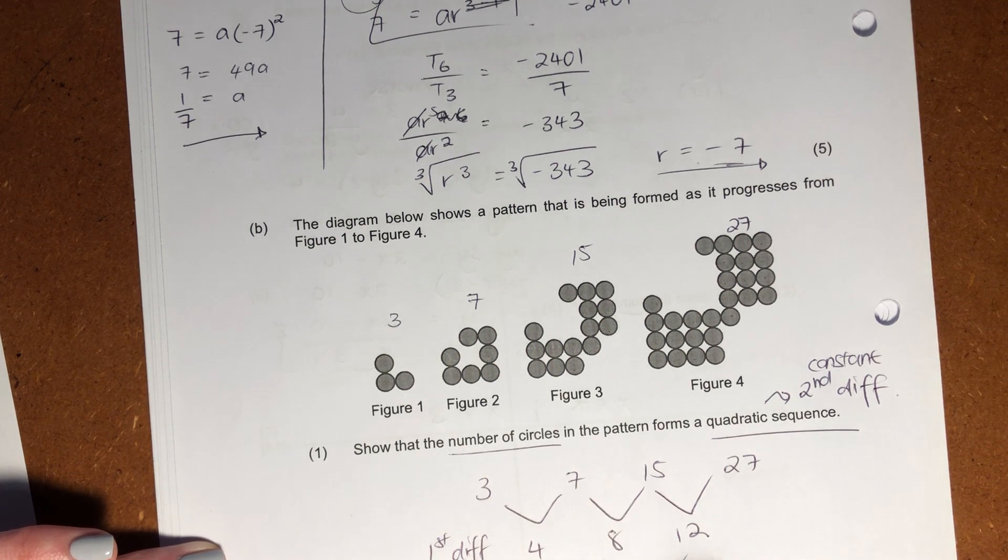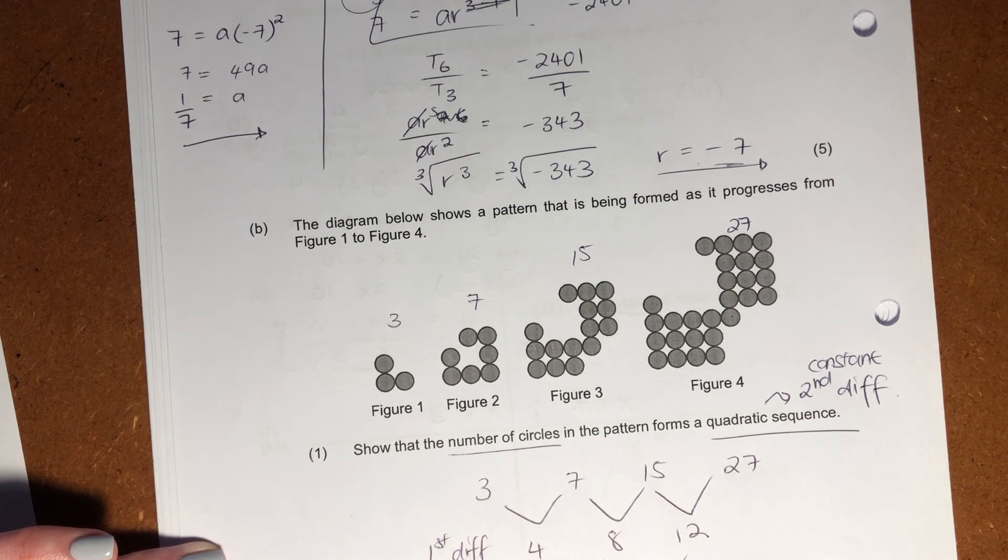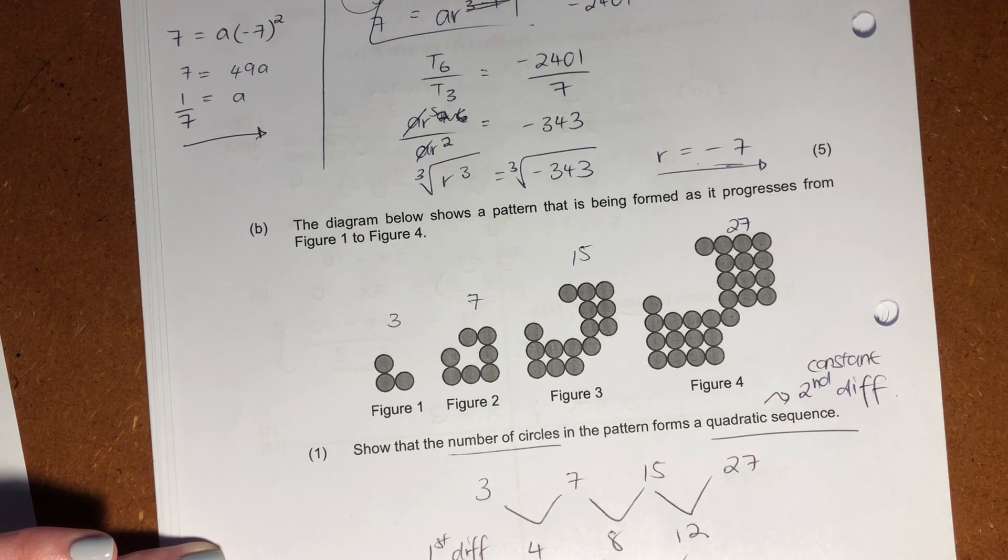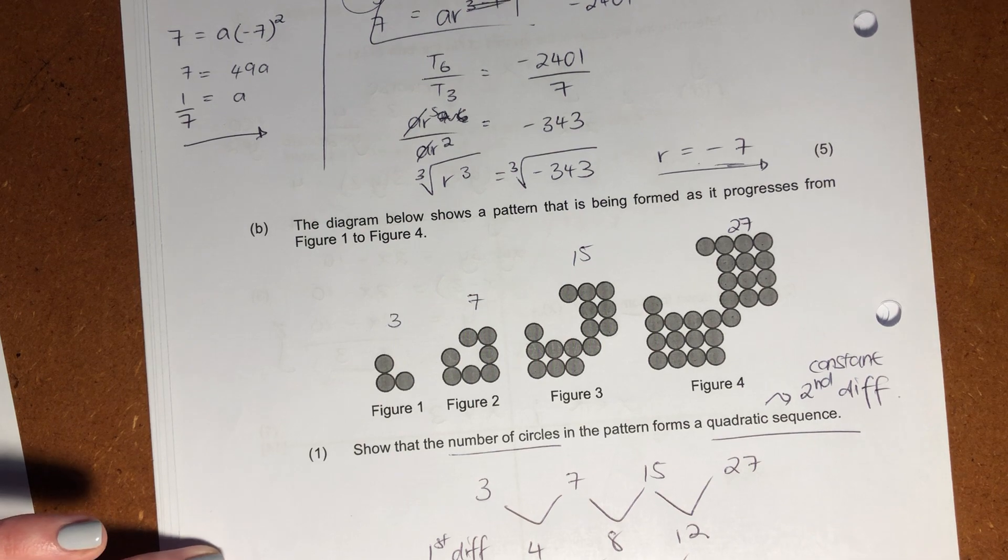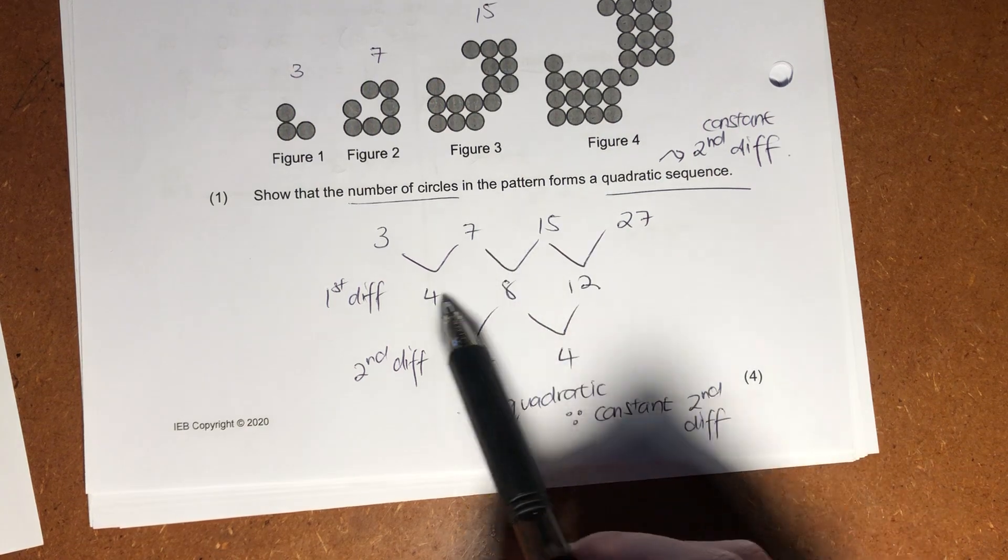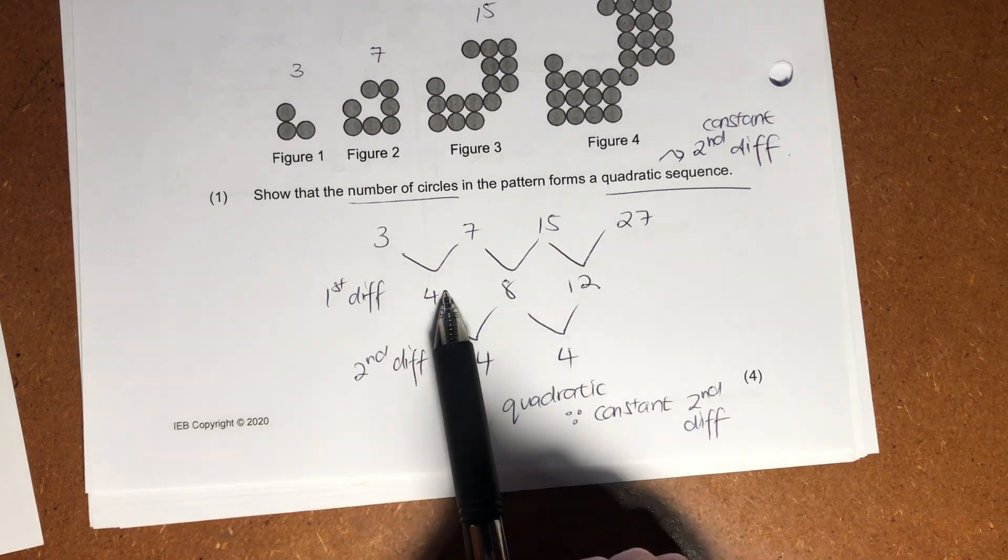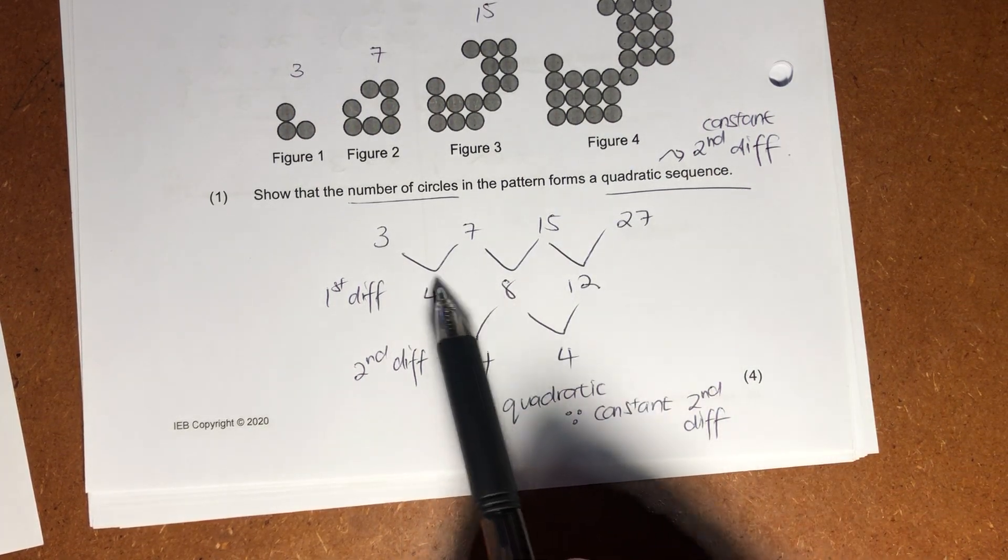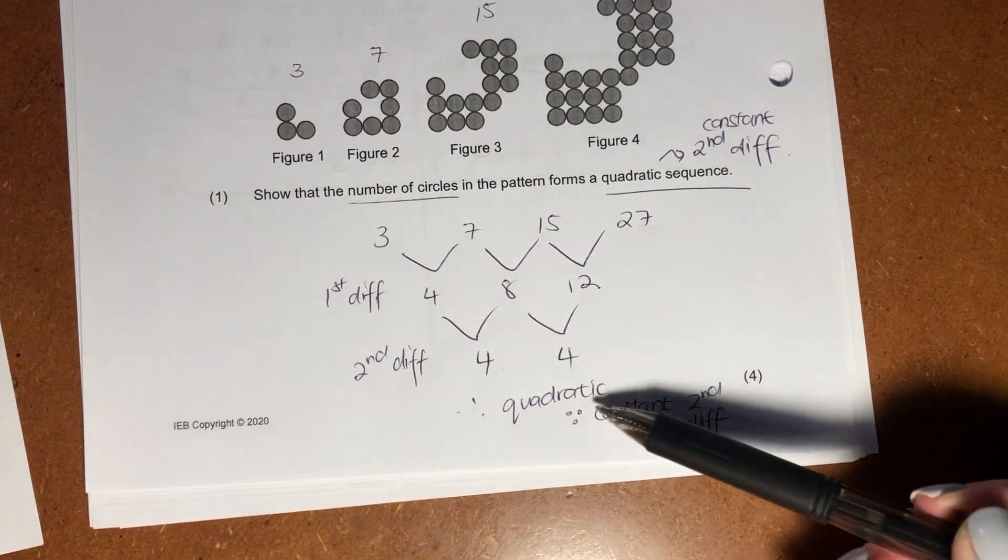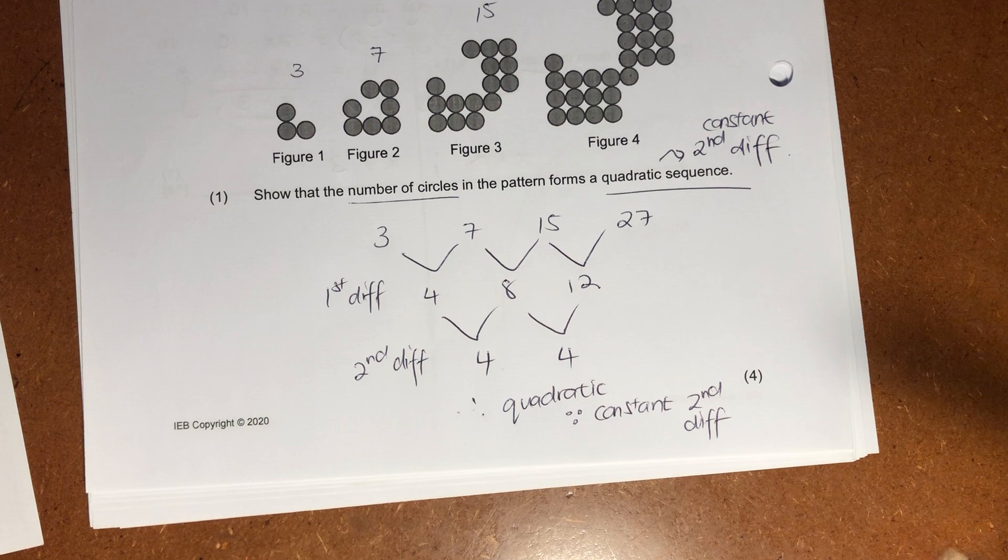And then our difference between 4 and 8 is 4, and 8 and 12 is 4. And there's our second difference. So therefore, we know it's quadratic because of the constant second difference. I have been doing this whole thing without showing you. Right? So you see here, difference. How did I get the difference? 7 minus 3, that gives me that. How did I get the second difference? 8 minus 4 gives me that. Because there's a constant second difference, we know that it is quadratic. By definition.